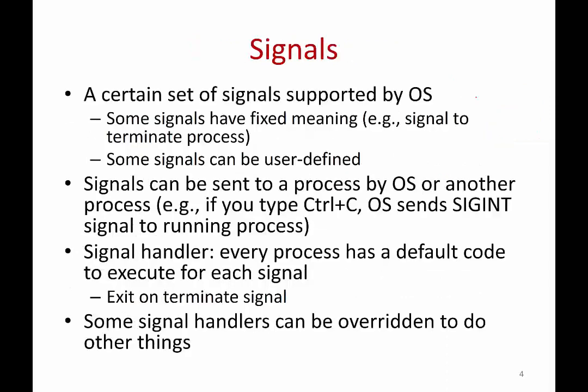The next idea is the concept of signals. Signals are well-defined messages that can be sent to processes. Some of these signals have a fixed meaning — for example, there is a signal to kill or terminate a process. When a process receives that signal, it is always terminated. But there are also some other signals which can be defined to mean whatever you want. A signal can be sent to a process either by the operating system or by another process. When a process gets a signal, a code called the signal handler is executed.